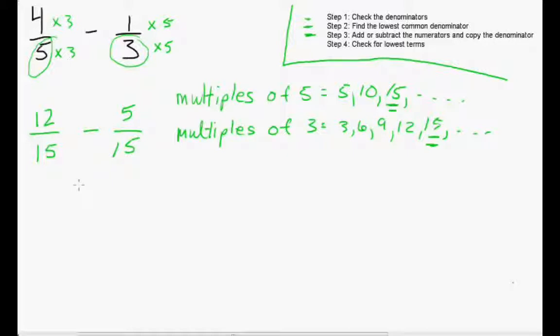Moving on to step 3, we're going to add or subtract the numerators. Here we're subtracting, so 12 subtract 5 gives us 7. And we're just going to copy that denominator.